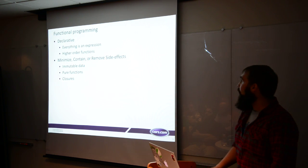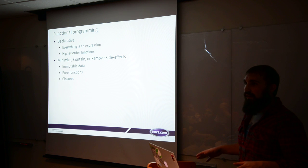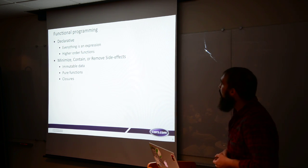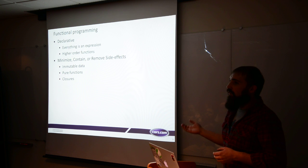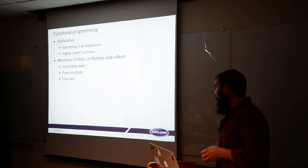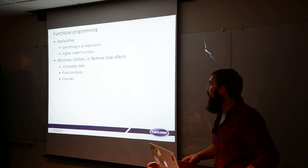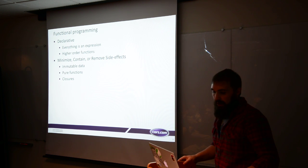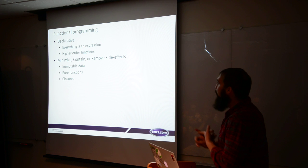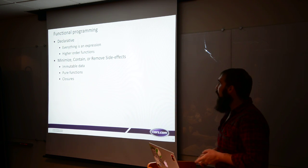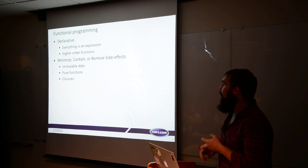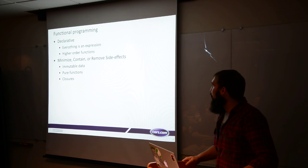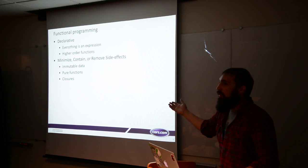So then what is functional programming? It's more declarative. Everything in functional programming is an expression — just a bit of code that results in some sort of value that we care about. There's also a lot of use of higher order functions, which we'll talk about shortly. Contrary to imperative programming, we want to minimize, contain, or do away with entirely any side effects in our code. In a functional language, everything is probably immutable by default, and you're going to want to use pure functions. And because of some of those things, your language is going to rely on what are called closures.